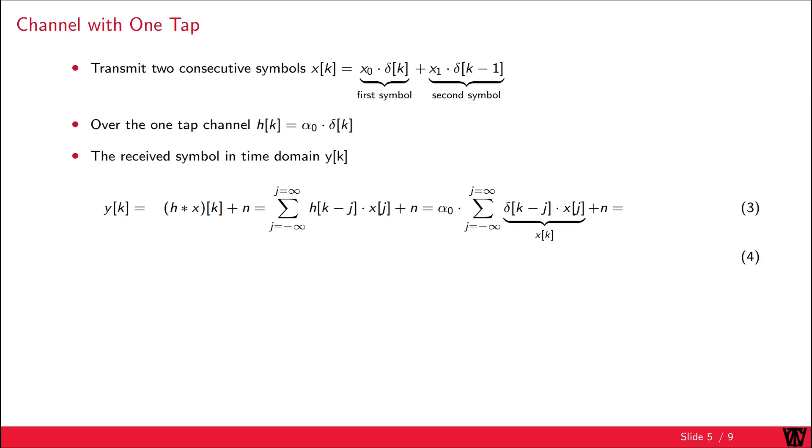Consequently we get the solution to our problem by alpha 0 times X dependent on K plus the noise. Now we can insert our two transmit symbols into this equation and get the final solution.